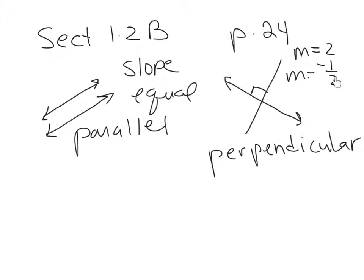Two and one half are reciprocals. They never have the same sign — they always have opposite signs. One has to be positive, one's negative, and the numbers are also reciprocals.